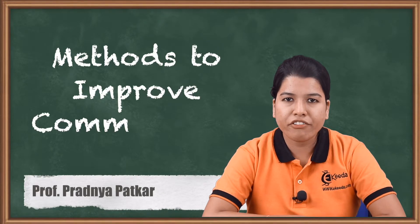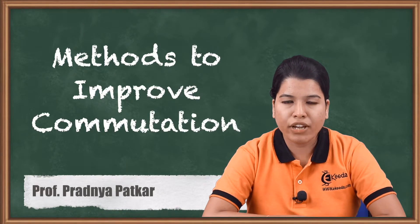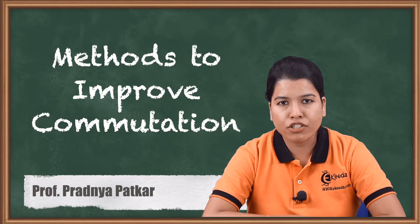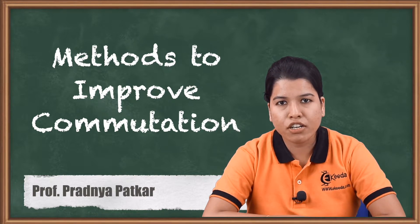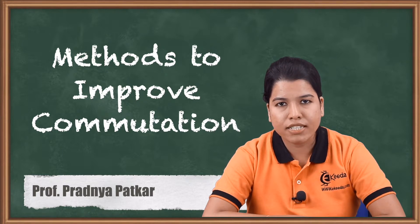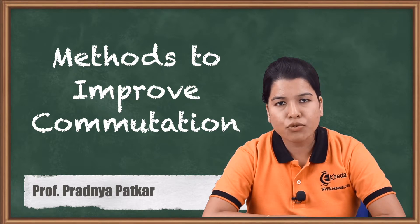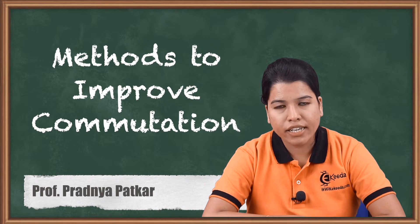Hello friends. In the previous video we studied the total process of commutation. Commutation is nothing but the reversal of current in the coil short-circuited by the brushes when the coil passes the MNA. In this process, the current in the coil rises to a particular value, then it reduces to zero, and then again it rises to a particular value in the negative direction.